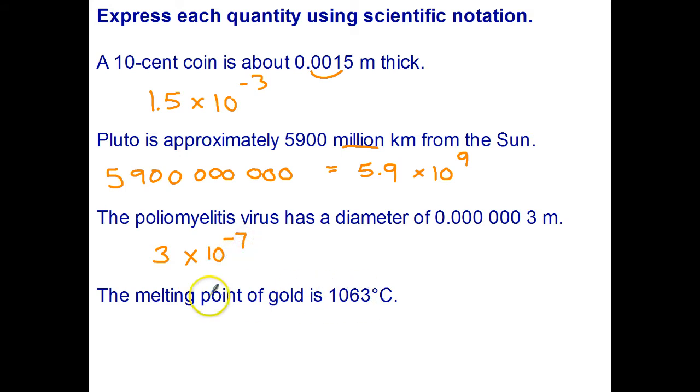And for the last one, again we're illustrating here that sometimes it's easier to just write the normal number, not scientific notation. So for that one, 1.063, I move my decimal point three places, so times 10 to the third. For this one here, you're better off just writing it as 1063.